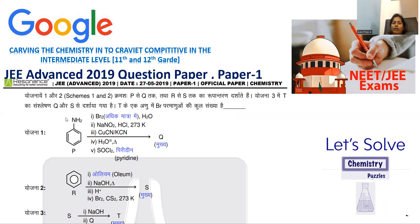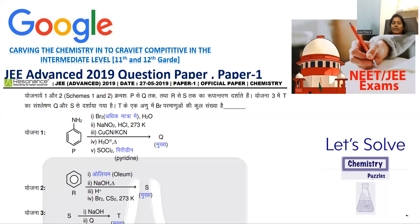In scheme one, aniline is taken as P and Q is to be determined. In scheme two, R is benzene and S is to be identified. In scheme three, S is taken and T is to be identified. The answer is: four bromines are present in the final product T.